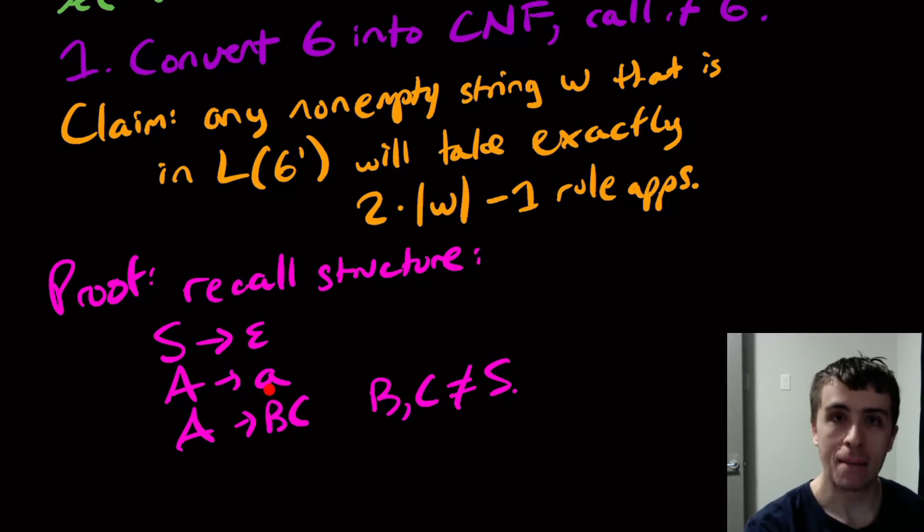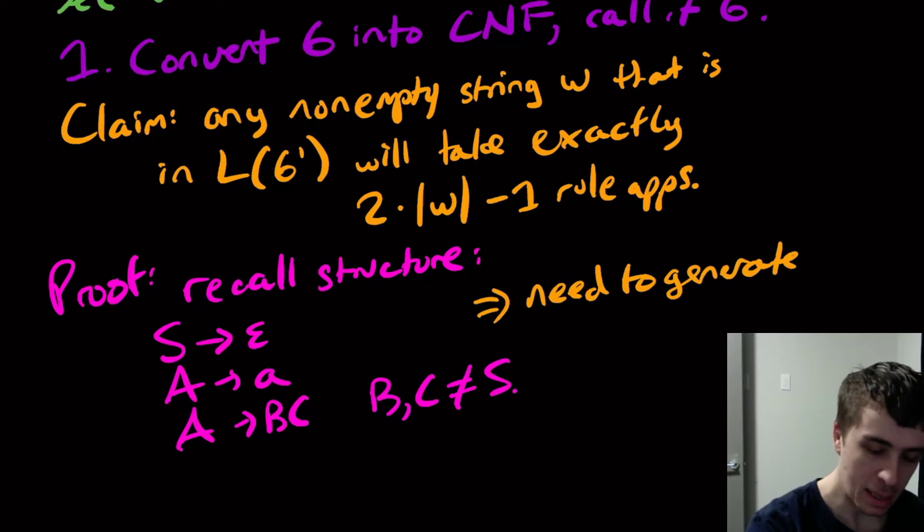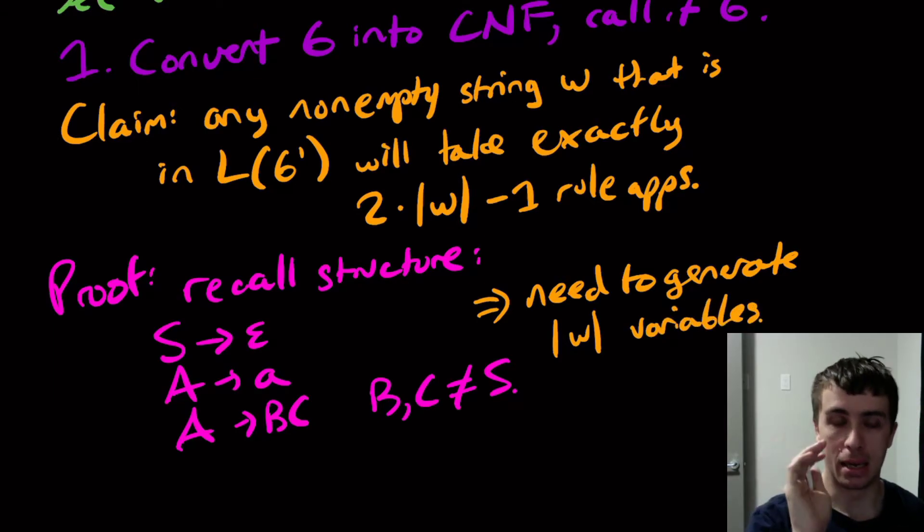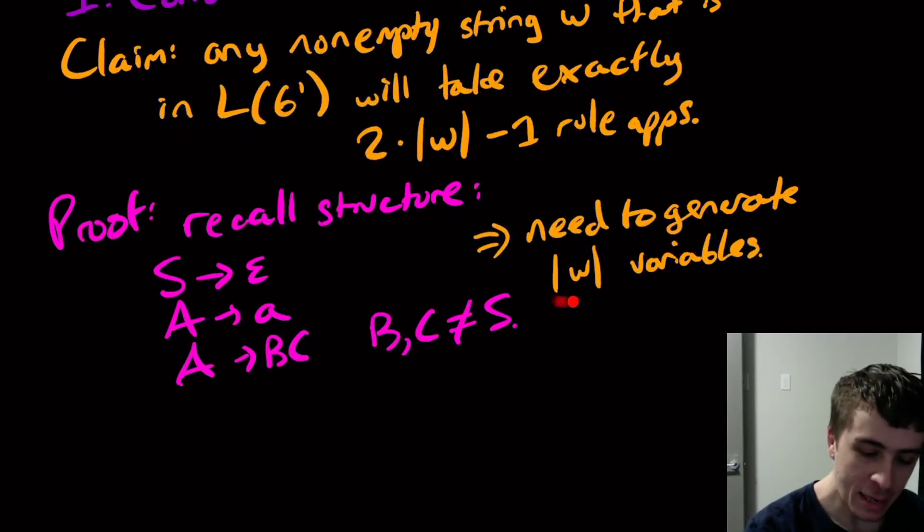So that means this implies we need to generate the length of w variables. Because to make one terminal, I need a variable to make it. I may need multiple copies of the same variable, but the length of w number of variables, not necessarily distinct. So we need to get up to this point.